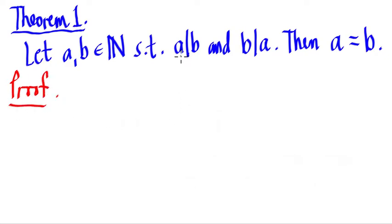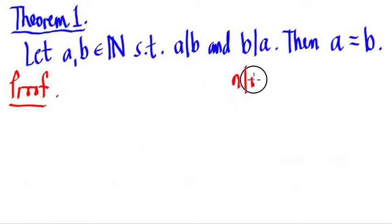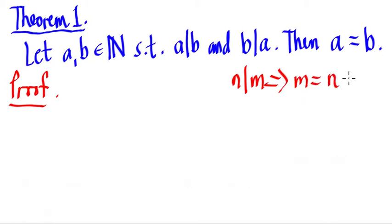We will recall that if a divides b — for any numbers, say n divides m — this is saying that m is equal to n times some factor j, because we're saying that n is a factor of m. Therefore, there is a certain j multiplied to n that will give us m.